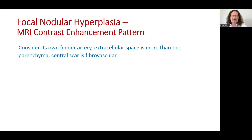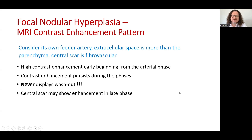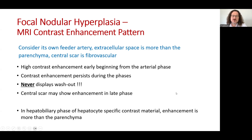During the evaluation of contrast enhancement, we should consider its own feeder artery. The extracellular space is greater than the background and the scar is fibrovascular. That is why FNH displays very high contrast enhancement early, beginning from the arterial phase. Enhancement persists during all phases and it never displays washout — this is a very important finding. The central scar may show enhancement in the late phase. If hepatocyte-specific contrast material is used, enhancement is greater than the parenchyma in the hepatobiliary phase.